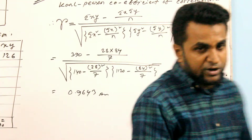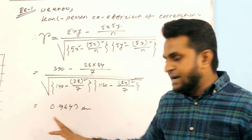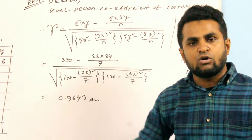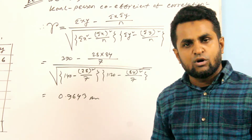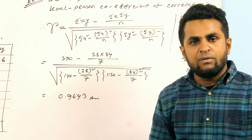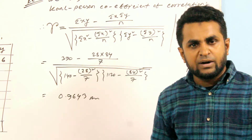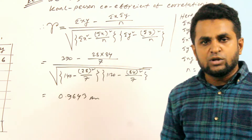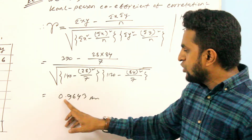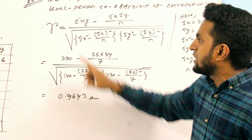So, what does R equal? R is 0.9643. This is the Karl Pearson formula result. R equals 0.9643.